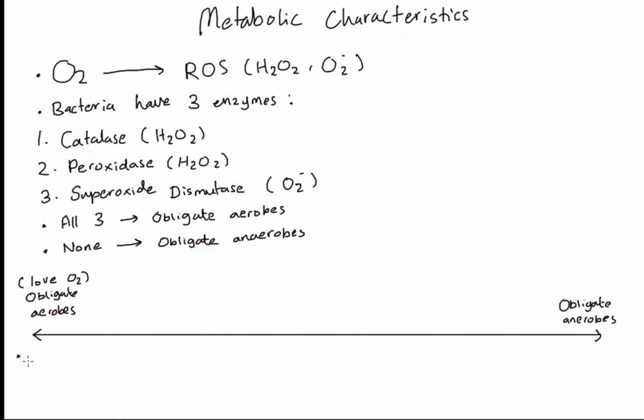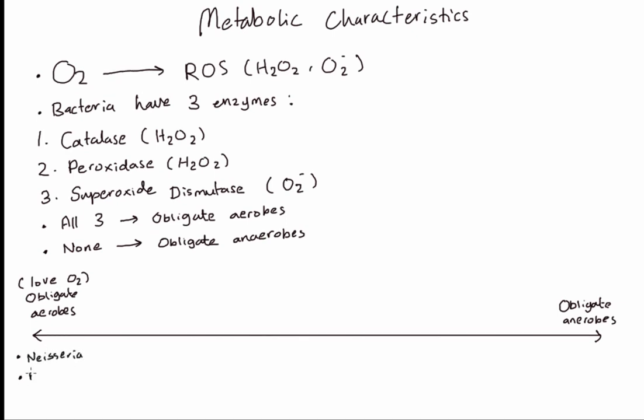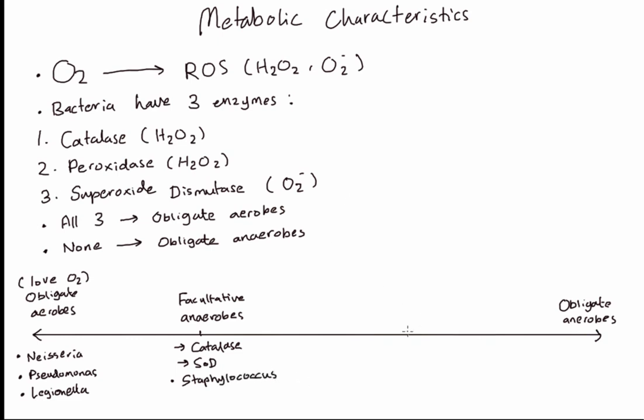So your obligate aerobes, the bacteria that have all three enzymes. Examples are Neisseria, Pseudomonas, and Legionella. Some bacteria only have two enzymes: catalase and superoxide dismutase. We call these facultative anaerobes. They actually usually live in oxygen, but they can live by fermentation. Example of this is Staphylococcus. Now Staphylococcus we call it catalase positive.